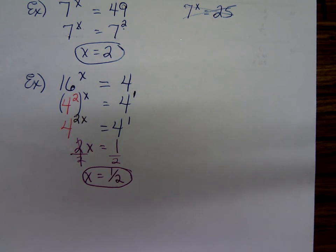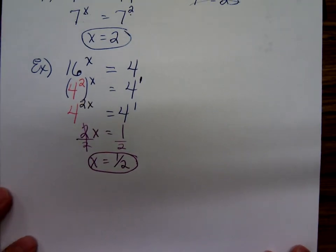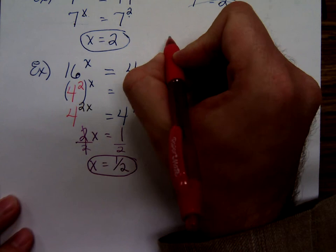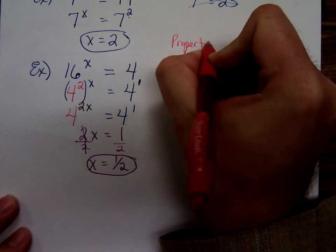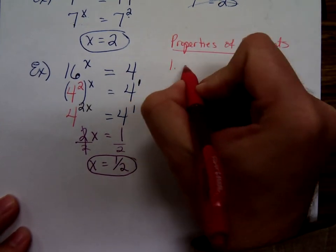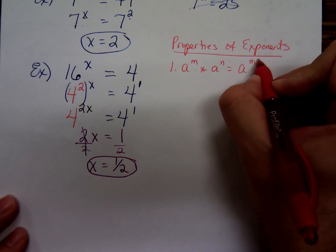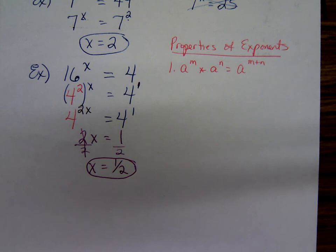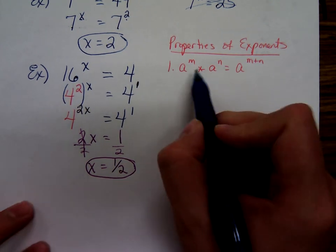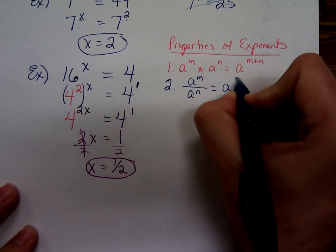Now, maybe we should review the rules of exponents. These are properties of exponents you would have seen in a previous math course. First one: if you're going to multiply like bases, a to the m times a to the n, you add the exponents. To multiply common bases, we add the exponents. To divide common bases, we subtract the exponents.